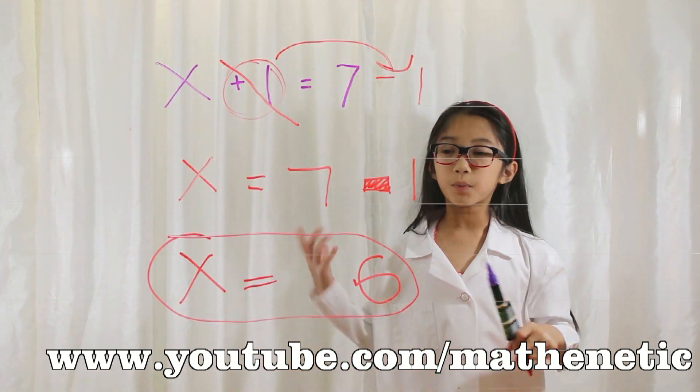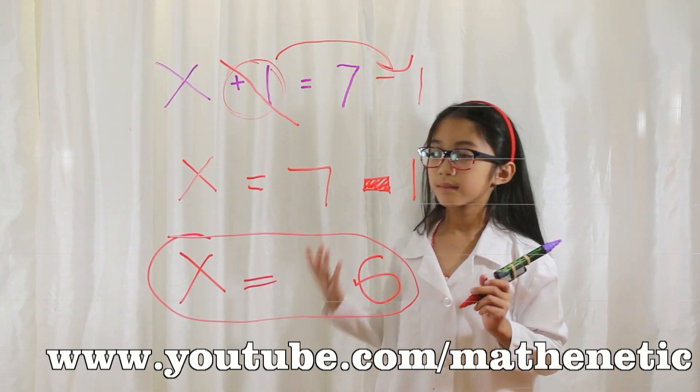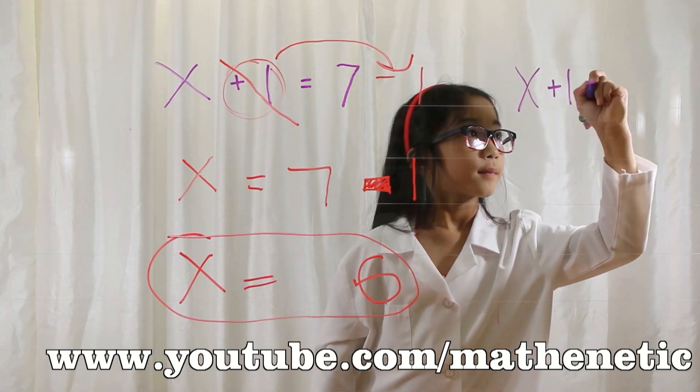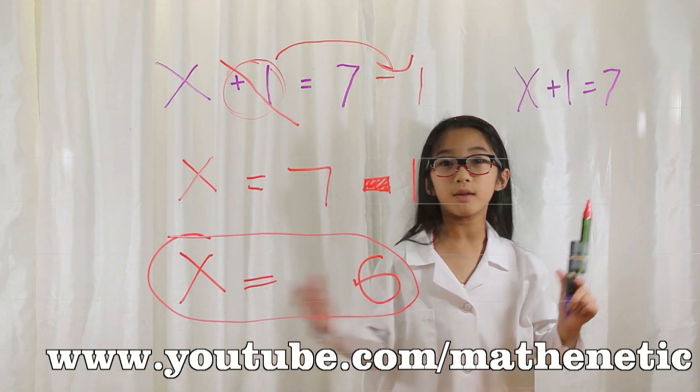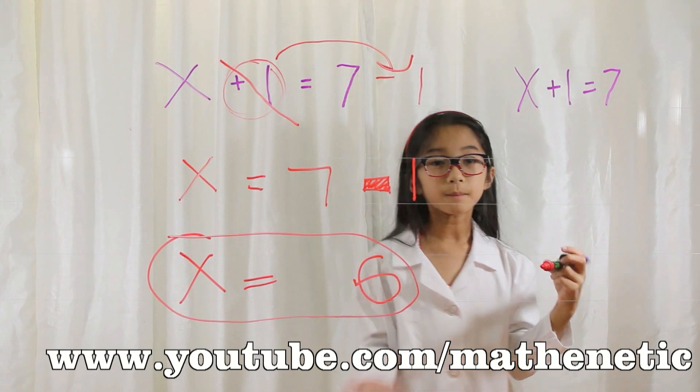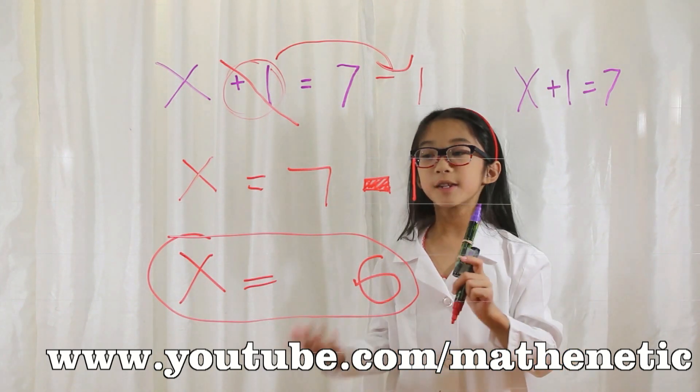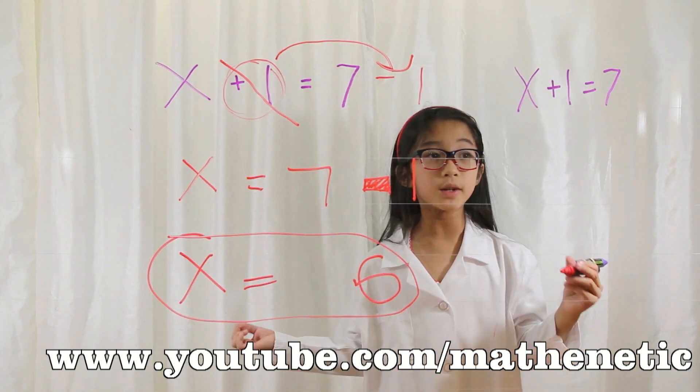Now I'm going to prove to you this is correct. The original equation was x plus 1 equals 7, right? Well, if you substitute 6 in, the equation will look like...